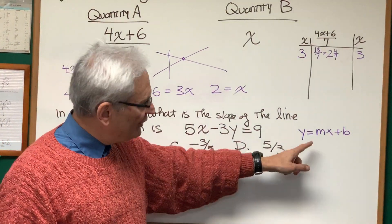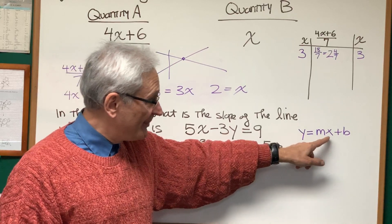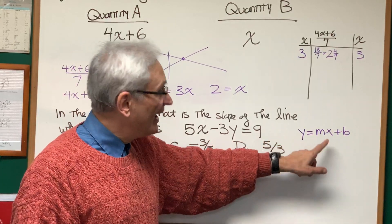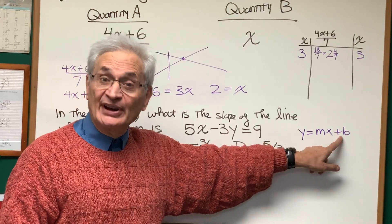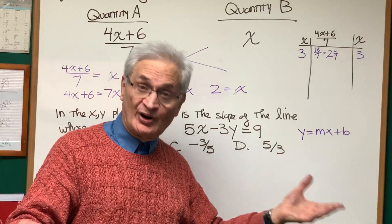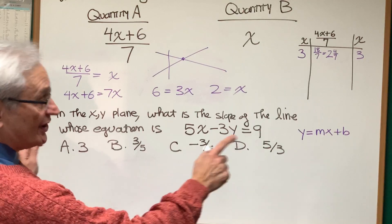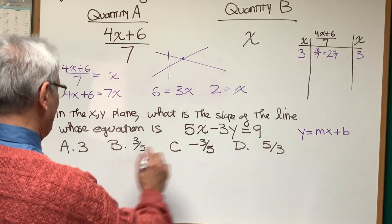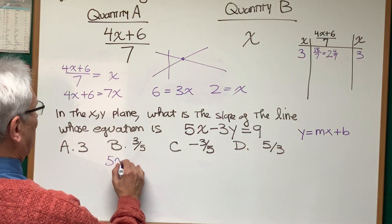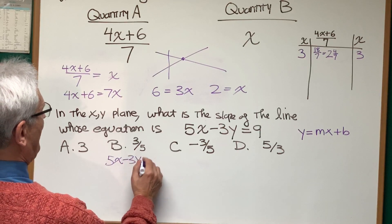Well, the way to solve this is to put the equation into y equals mx plus B form. m is going to be the slope, B is going to be the y-intercept, where it intercepts the y-axis, pardon me. So let's do that. Let's say 5x minus 3y equals 9.